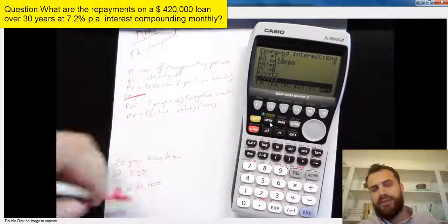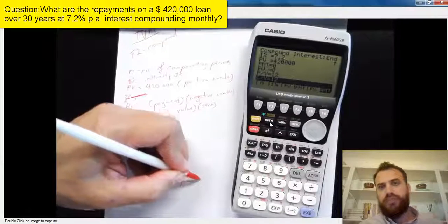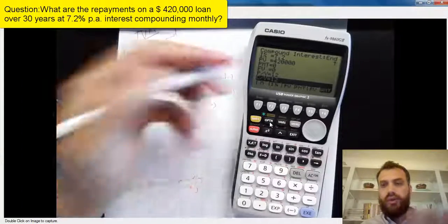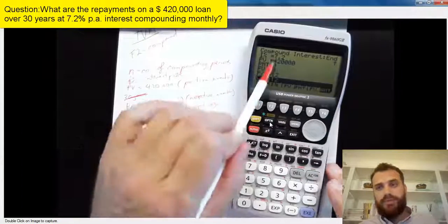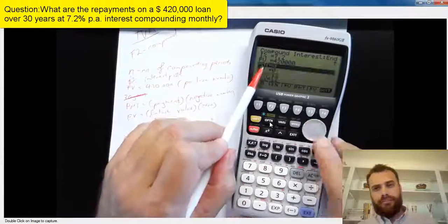Now, PY stands for payments per year, and CY stands for compounding periods per year. They're always going to be the same in the questions we do. In this case, it's monthly repayment, so it's 12 payment periods per year.